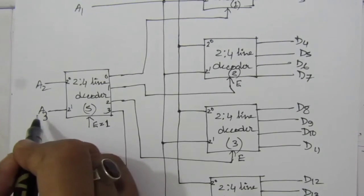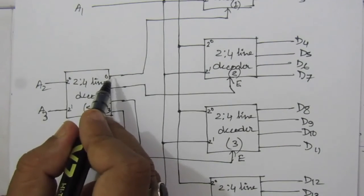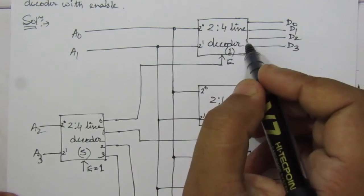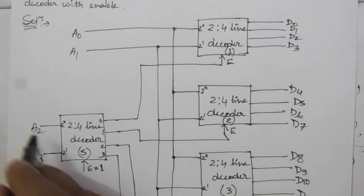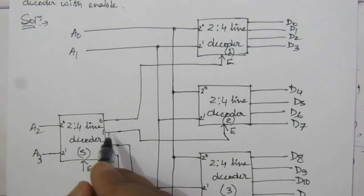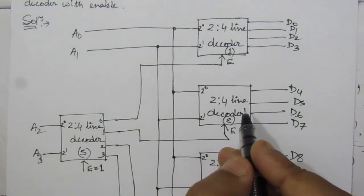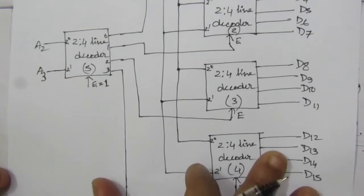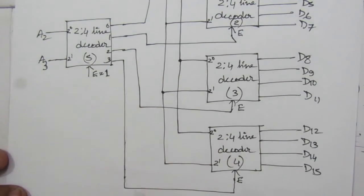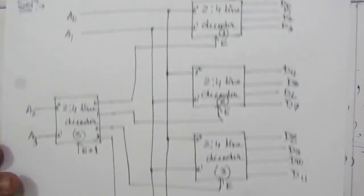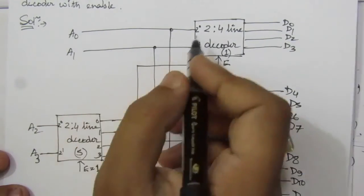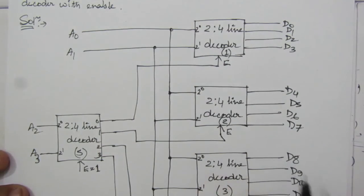Whenever we have inputs A3A2 = 0,0, the first output line of the 5th decoder goes high, enabling decoder 1 while all others are off. For A3A2 = 0,1, the second output is high and only decoder 2 operates. Similarly for 1,0, decoder 3 is enabled, and for 1,1, decoder 4 is enabled. The inputs A1 and A0 are given to all 4 decoders.